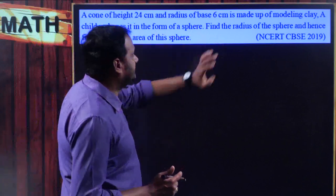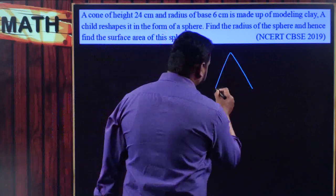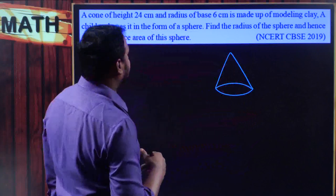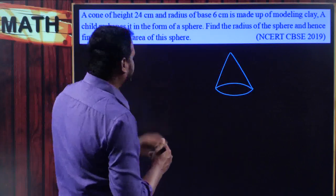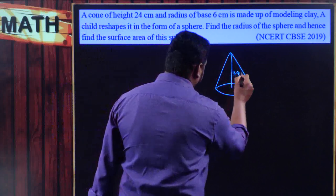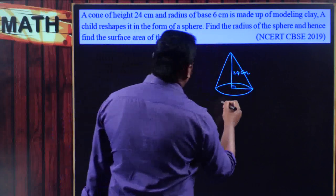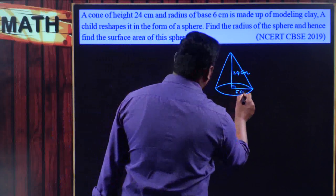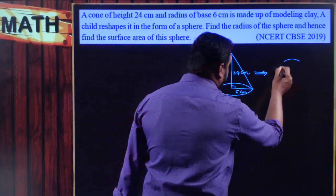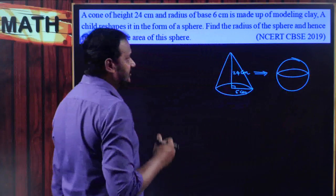Here a cone is transformed into a sphere — I am just drawing a rough figure. The height of the cone is 24 centimeters and base radius is 6 centimeters. This solid is transformed into another solid, which is a sphere.